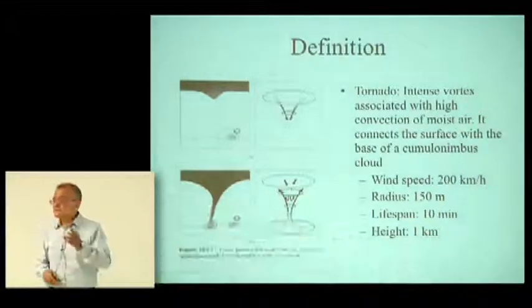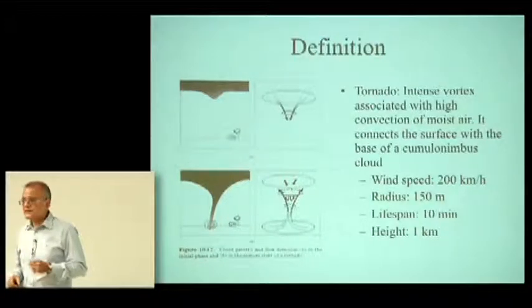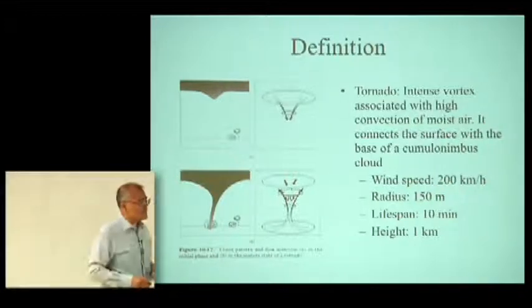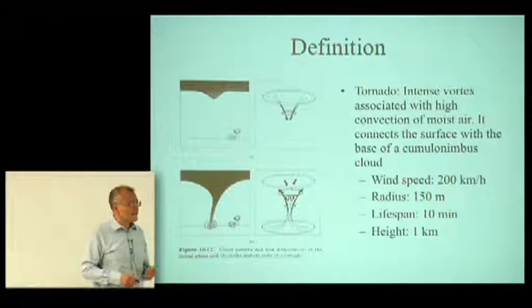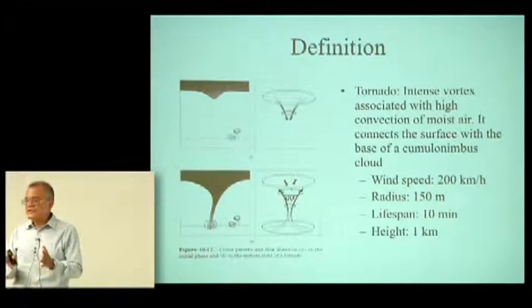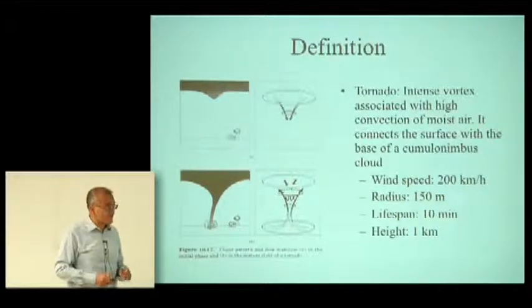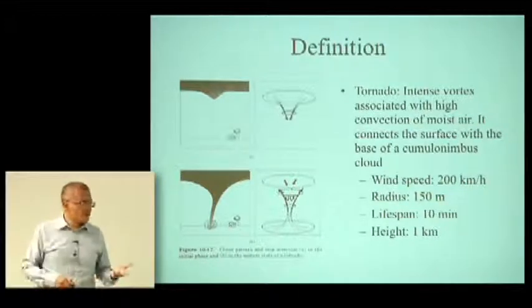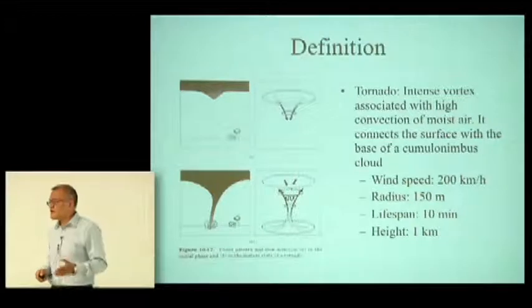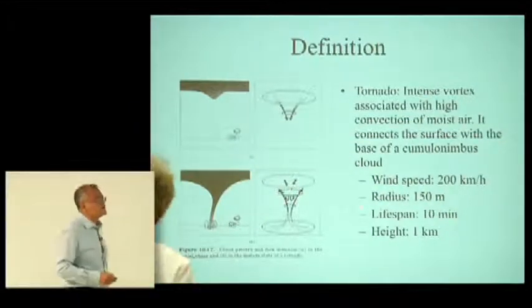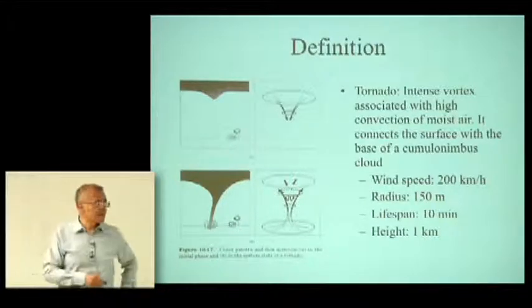These are mean values for tornadoes. They can have velocities as low as 70 km/h and as high as 400 km/h. The radius is also a mean value — they can be as thin as 15 meters in diameter but also more than a kilometer in diameter. The lifespan can range from a couple of minutes up to a few hours; the longest registered is about three and a half hours, the famous three-state tornado in the United States. The height is the length of the tornado from the surface to the base of the cloud.